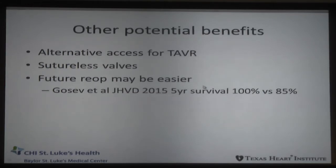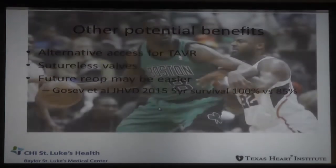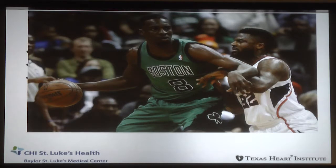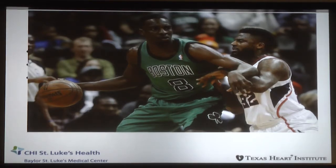Other potential benefits: with the mini upper sternotomy, you have access for TAVR when you need it. Sutureless valves can be deployed through that exposure as well, and in the future, reoperations may be a lot easier. This patient — Jeff Green, a point guard for the Celtics — came in for a mini-sternotomy when I was training at Cleveland Clinic. It made a lot of sense for him. He had to get back on the court pretty quickly. He's young, so he had a biologic valve because he couldn't be on Coumadin playing in the NBA. He will probably, five to ten years from now, need another valve replacement or possibly a valve-in-valve TAVR. Reoperations are certainly easier when a previous mini-sternotomy was used.